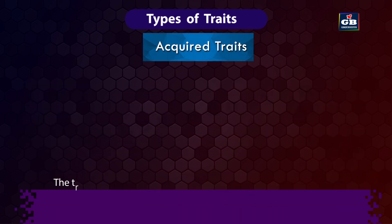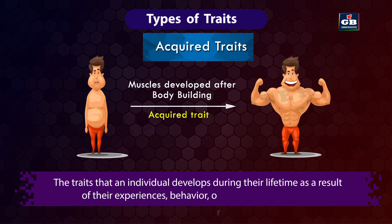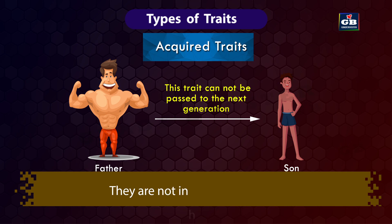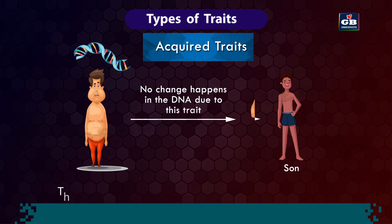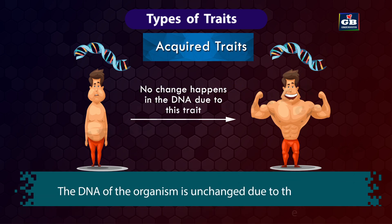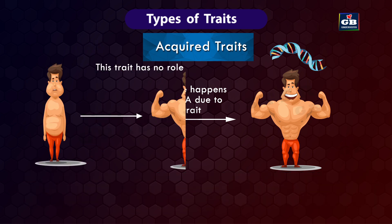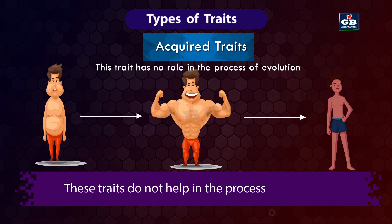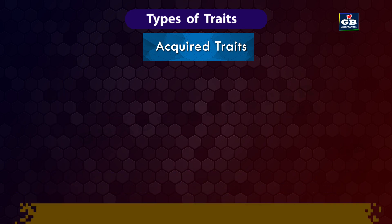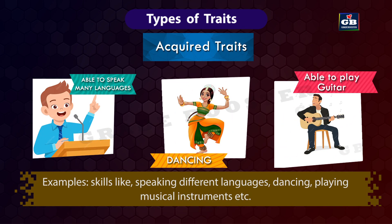Acquired traits are the traits that an individual develops during their lifetime as a result of their experiences, behavior, or environmental factors. They are not inherited genetically, and the DNA of an organism is unchanged due to these traits. These traits do not help in the process of evolution. Examples include skills like speaking different languages, dancing, and playing musical instruments.